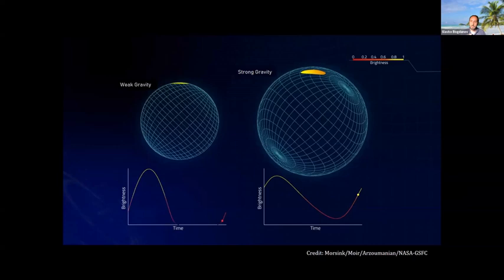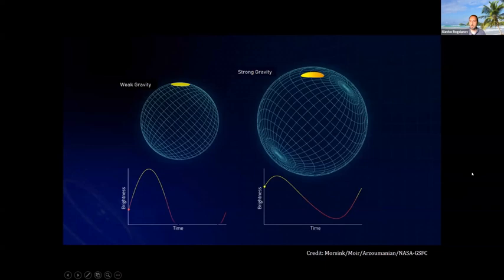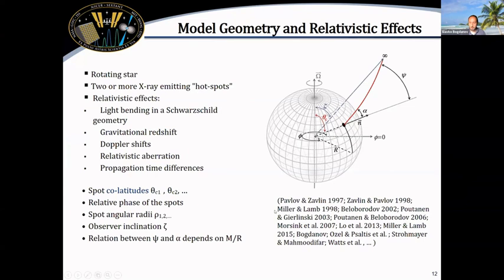That's why you're able to disentangle the mass and the radius with this kind of measurement instead of just the mass-to-radius ratio, which you'd get if you used slowly rotating stars. The general technique has been examined quite a bit over the past few decades, with many publications dealing with it.